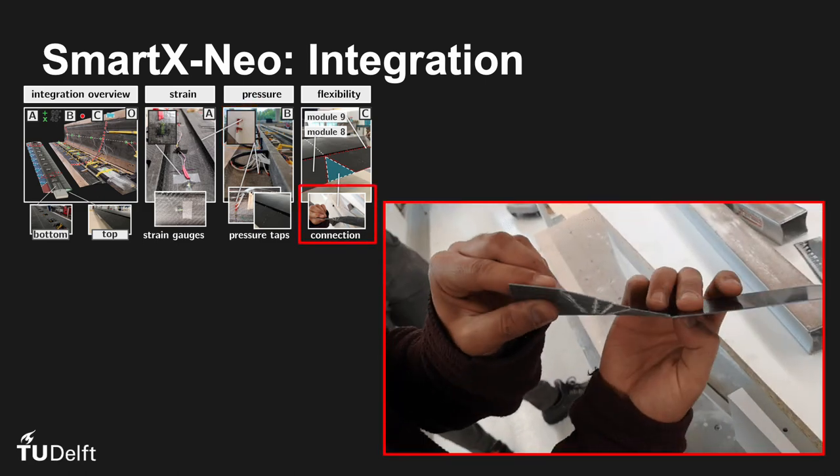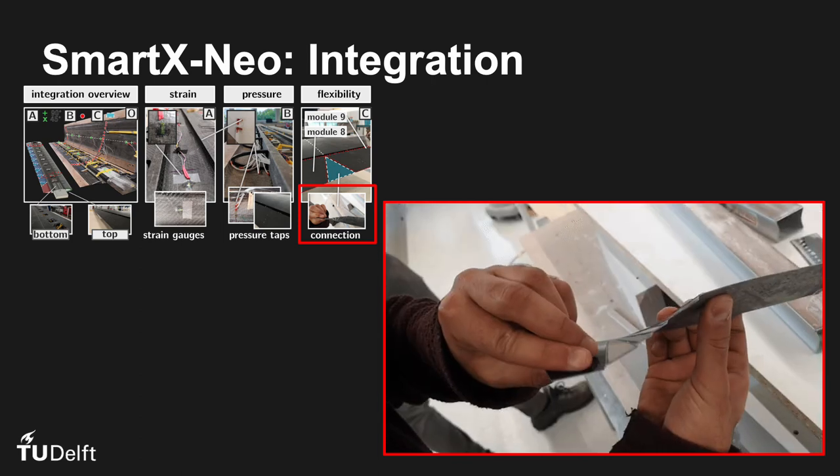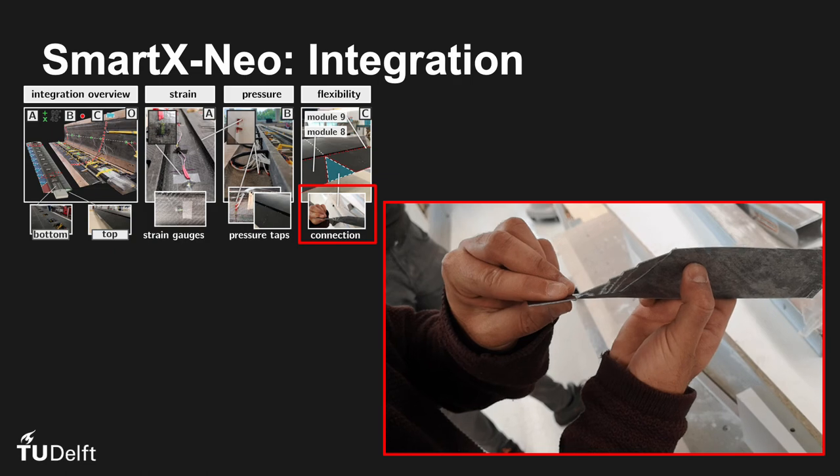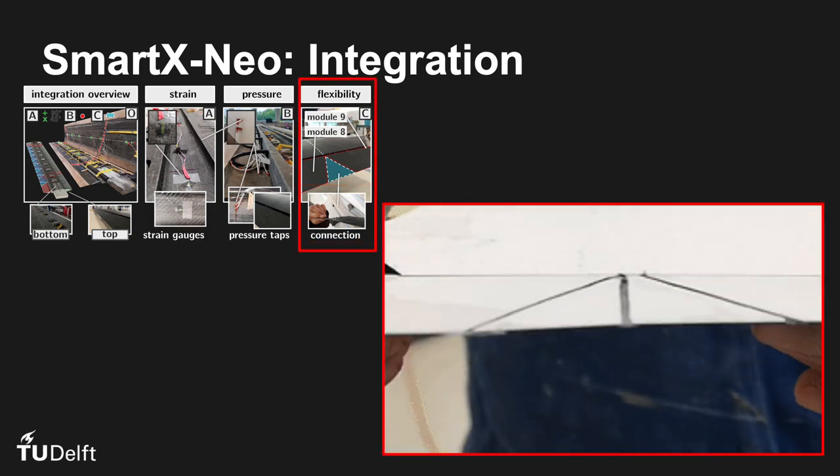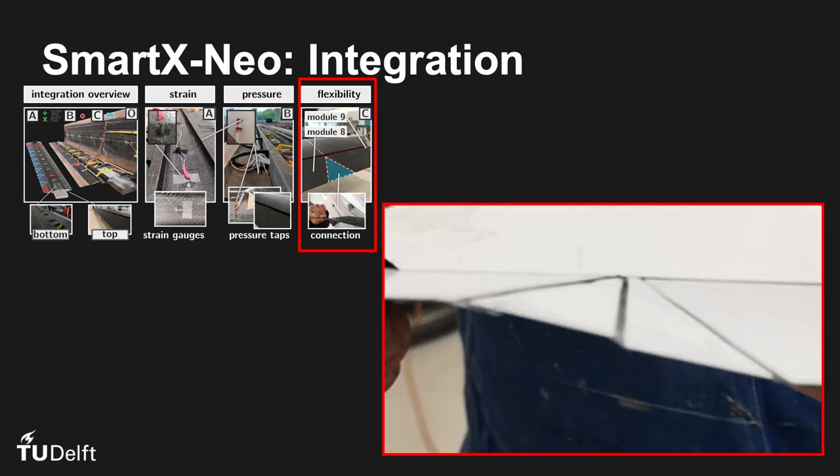A flexible interface is added between the adjacent modules to reduce the penalty of control allocation and increase the smoothness along the span. This is composed of feather-like, elastomer-infused composite skin sections, deforming with the flaps.